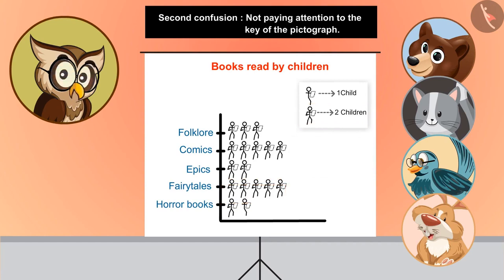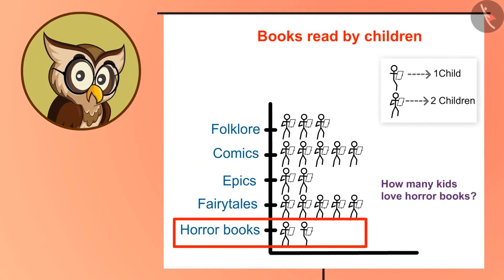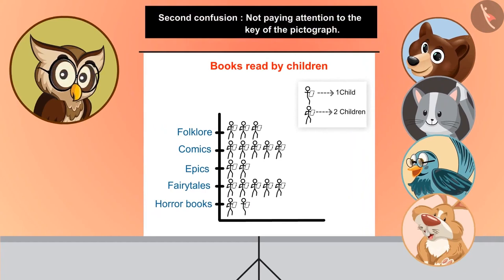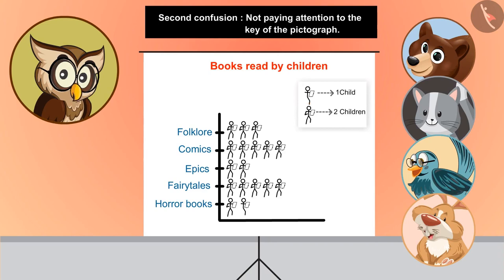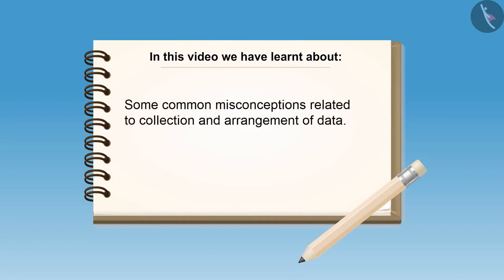So by making such lists we can easily show data with fewer pictures in the pictograph. Now again, take a look at the pictograph. Who will tell me how many kids love horror books? But here we have only half a stickman. Right! If a whole stickman means 2 children, then half the stickman will mean 1 child. So how many children love horror books? 3. Absolutely right! So kids, in this video we have learnt about some common misconceptions related to collection and arrangement of data.